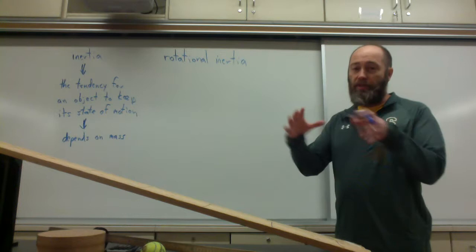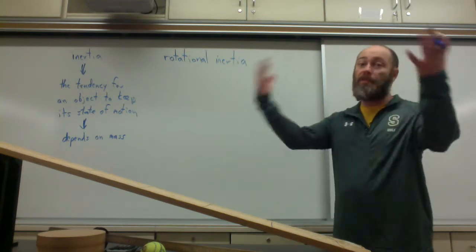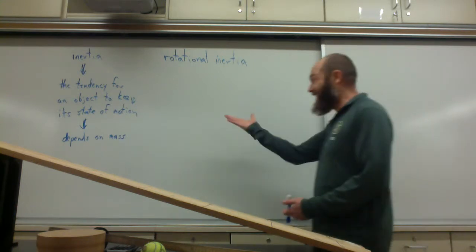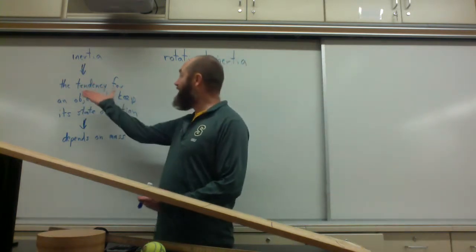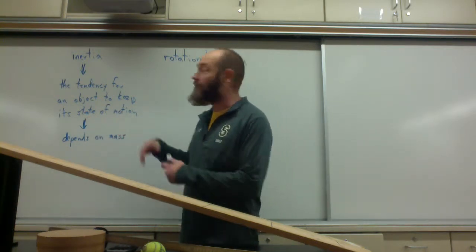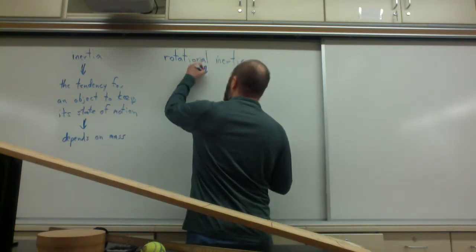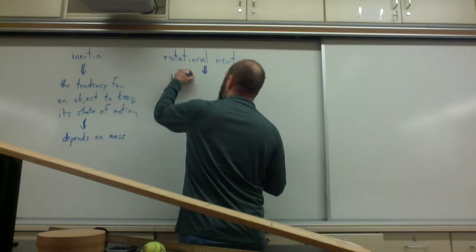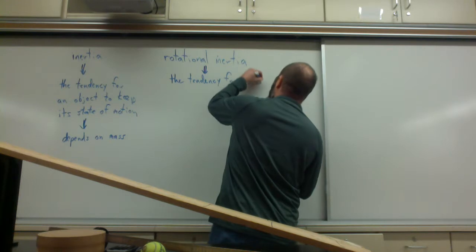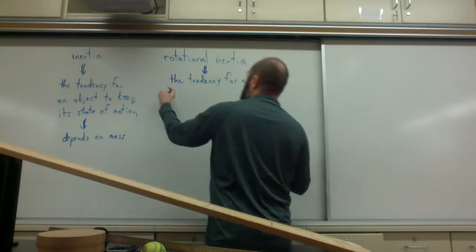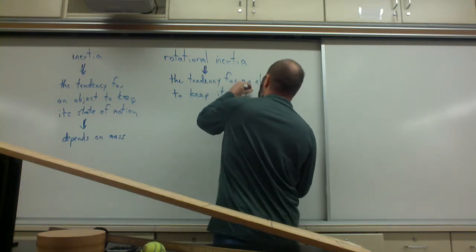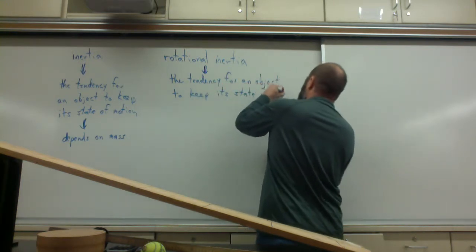It's the tendency for an object to keep its state of motion. If it's moving, it's going to stay moving. If it's not moving, it's going to stay at rest. So rotational inertia is the tendency for an object to keep its state of rotation.